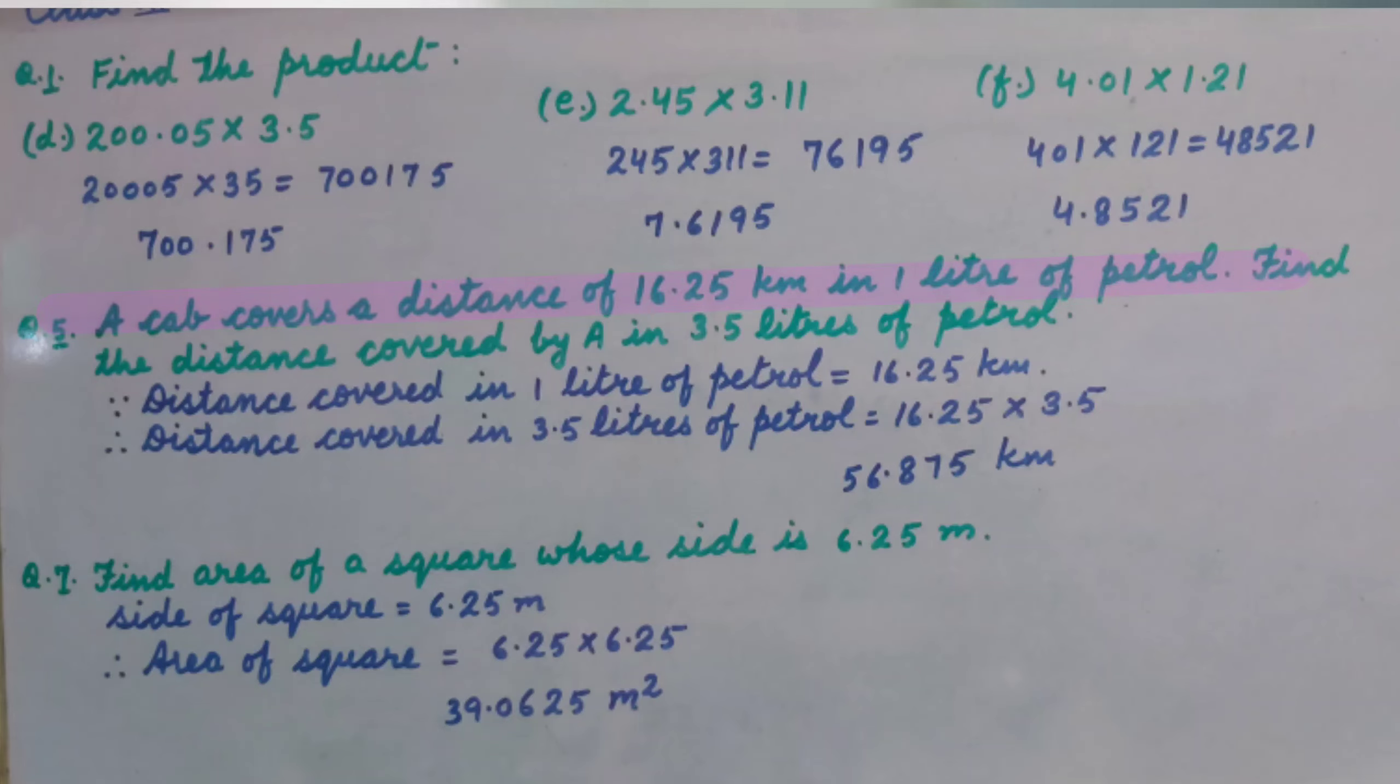Question number 5: A car covers a distance of 16.25 km in 1 litre of petrol. Find the distance covered in 3.5 litres of petrol. First, we write the information: distance covered in 1 litre is 16.25 km. Therefore, distance covered in 3.5 litres is 16.25 multiplied by 3.5, which is 56.875 km.